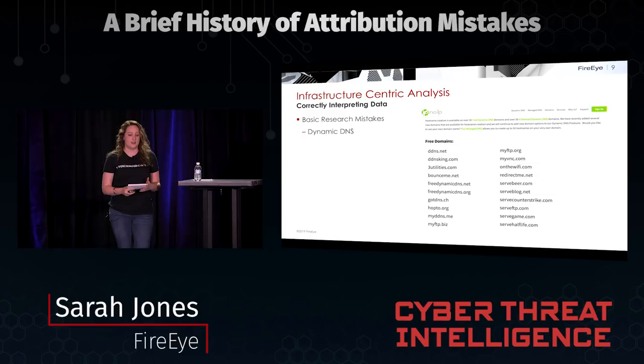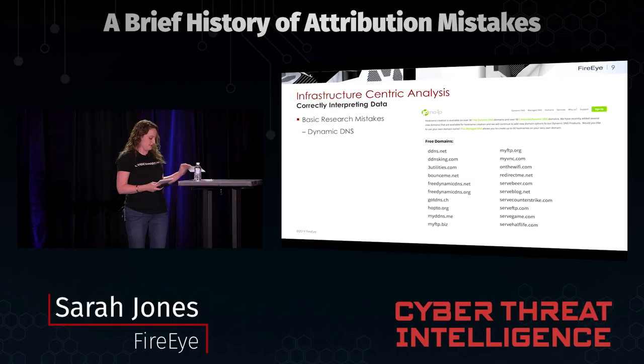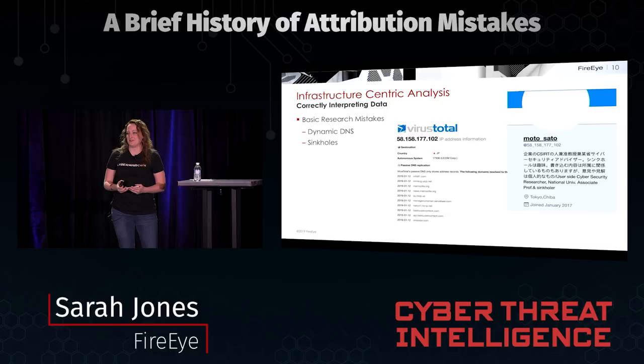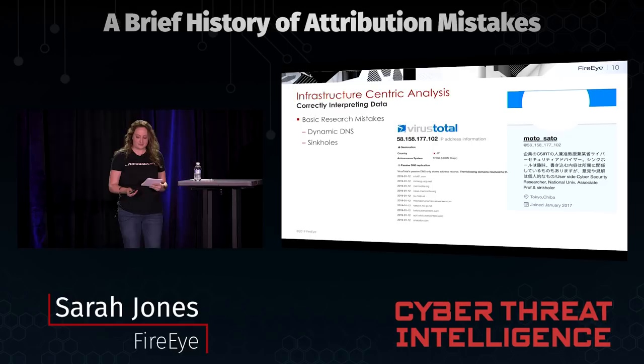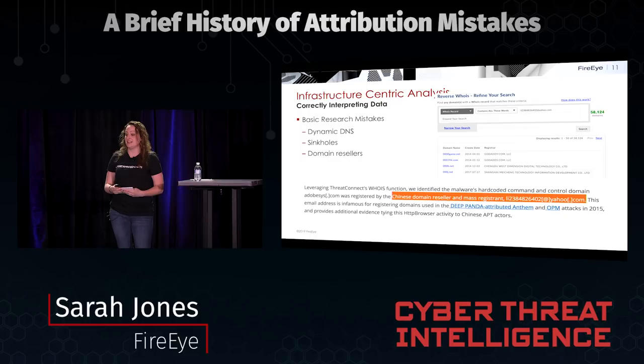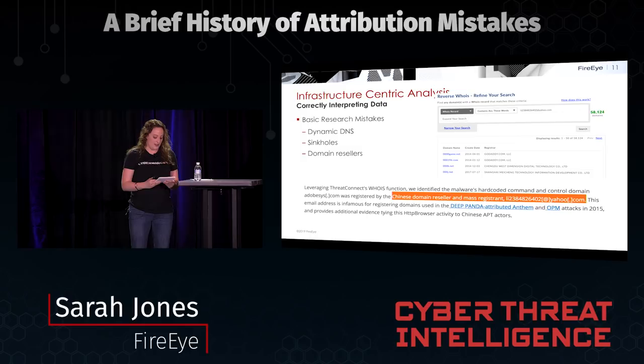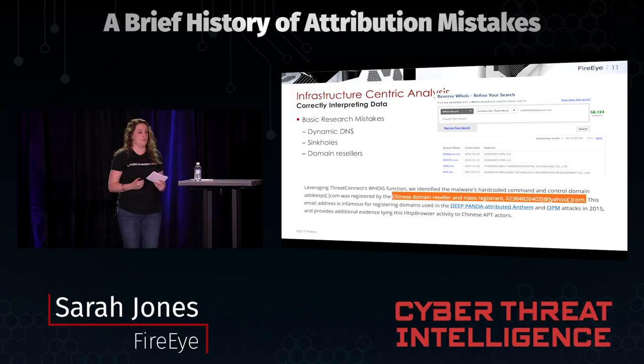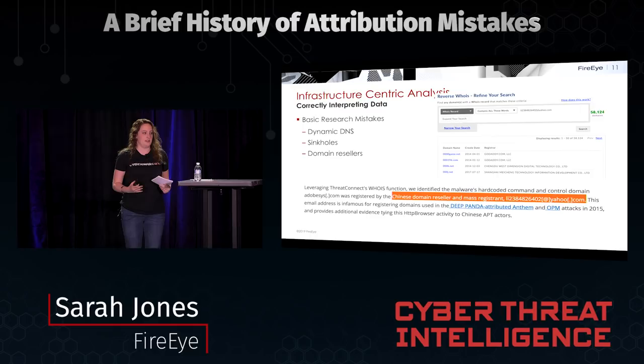This next example is also a pretty basic one. This is a sinkhole — and it's one of my favorites. This 58 IP: basically if it starts to look like China and the North Koreans are collaborating with Iran, you've probably come across a sinkhole. The next example I took from a ThreatConnect blog, and it does a great job of examining domain resellers. It highlights a common Chinese domain reseller that showed up in a lot of well-known APT blogs, correctly identifying that this address isn't unique to any one APT adversary, but it's still a useful data point.